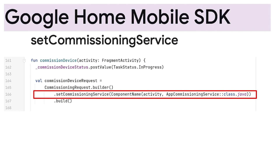But what if you'd like to commission devices to another fabric? To manage and control devices directly within our sample app, we'll need to create a local fabric and obtain the operational credentials needed to commission devices. We can inform the Google Home Mobile SDK that we'd like to commission devices to a local fabric by passing a custom service to the commissioning request object. In this example, we pass app commissioning service. With this modified flow, the Commissioning Client API commissions devices to the Google fabric first, then returns a callback to the service that we passed. Let's take a look at the app commissioning service next.